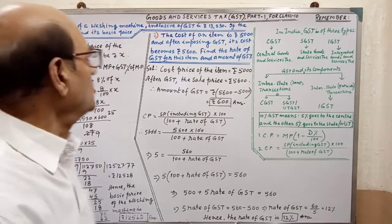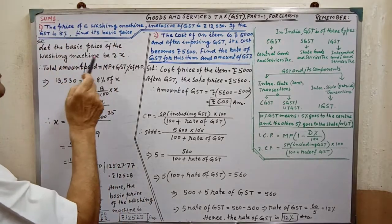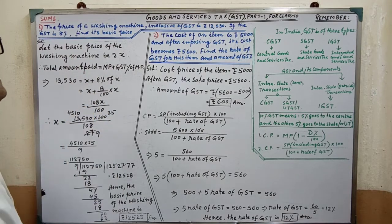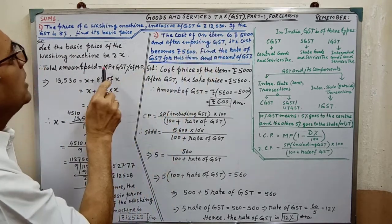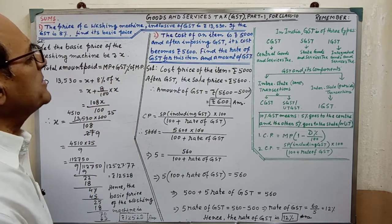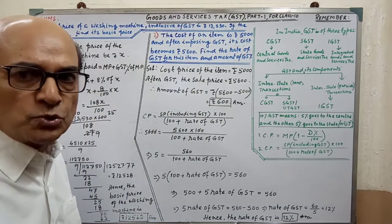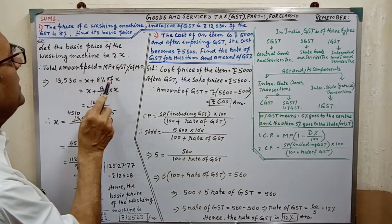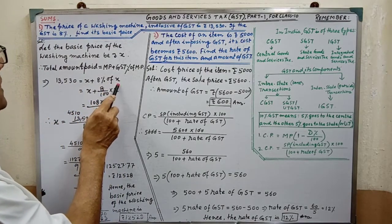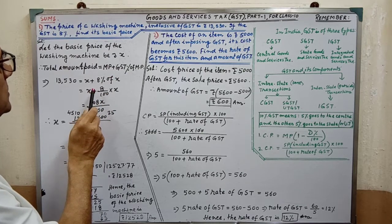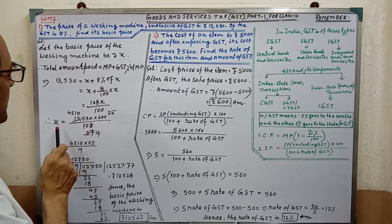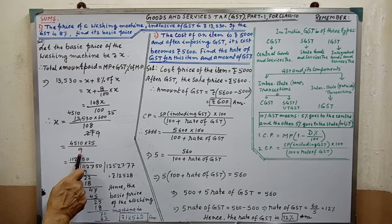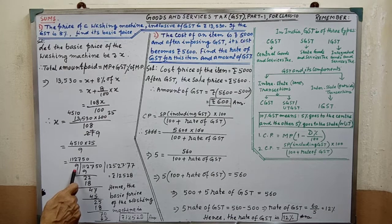Now the solution. Let the basic price of the washing machine be X. Total amount paid equals MP plus GST percent of MP. After writing this we have to put the relevant values in this way. Then we simplify. After simplification we are getting X equal to this. This division we may do in fair.